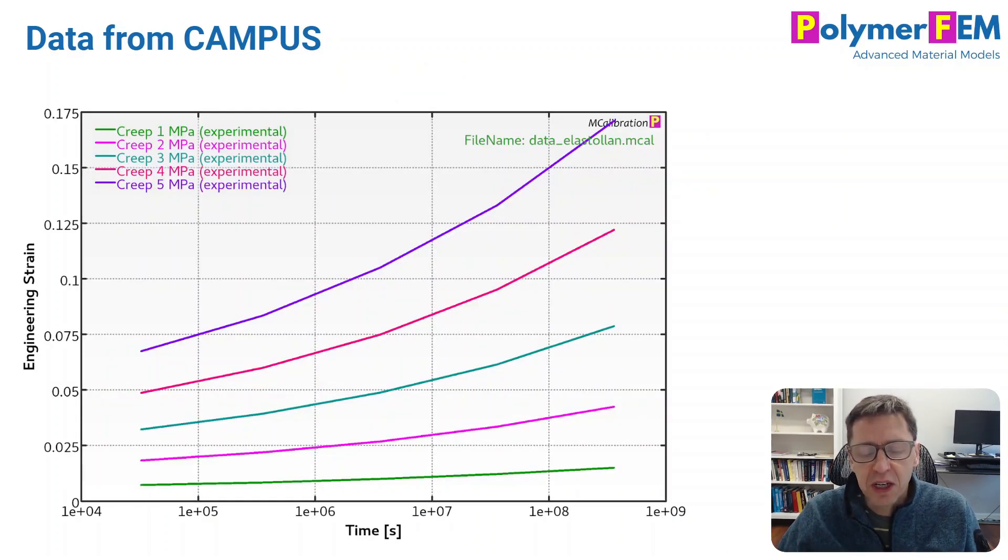And that's very easy to do. We know the stress, we know the modulus, so we can calculate the engineering strain from that. And this is the result that you get for these different stress levels that were available.